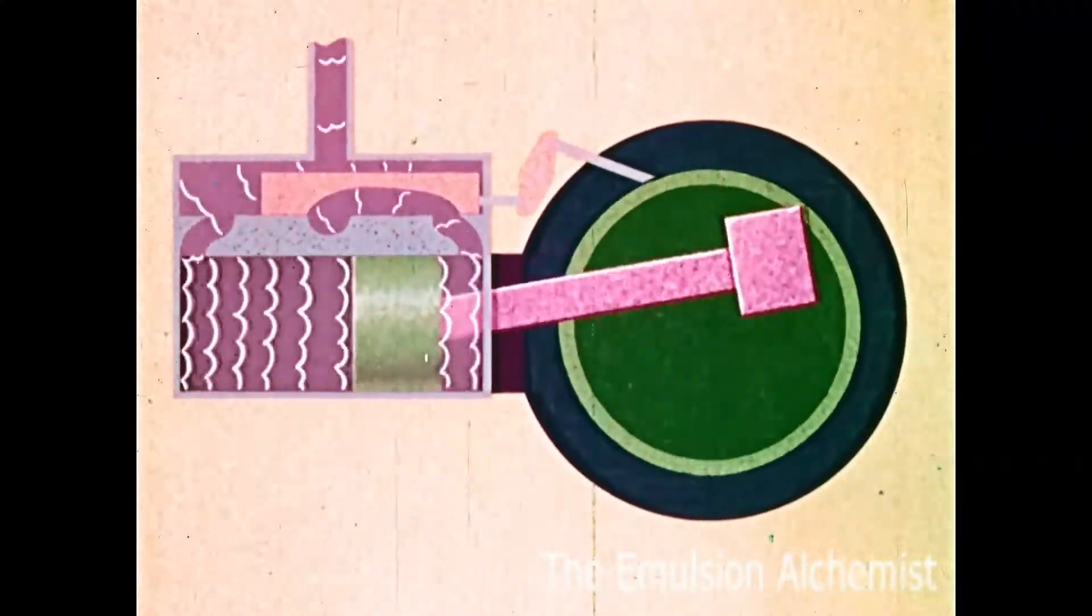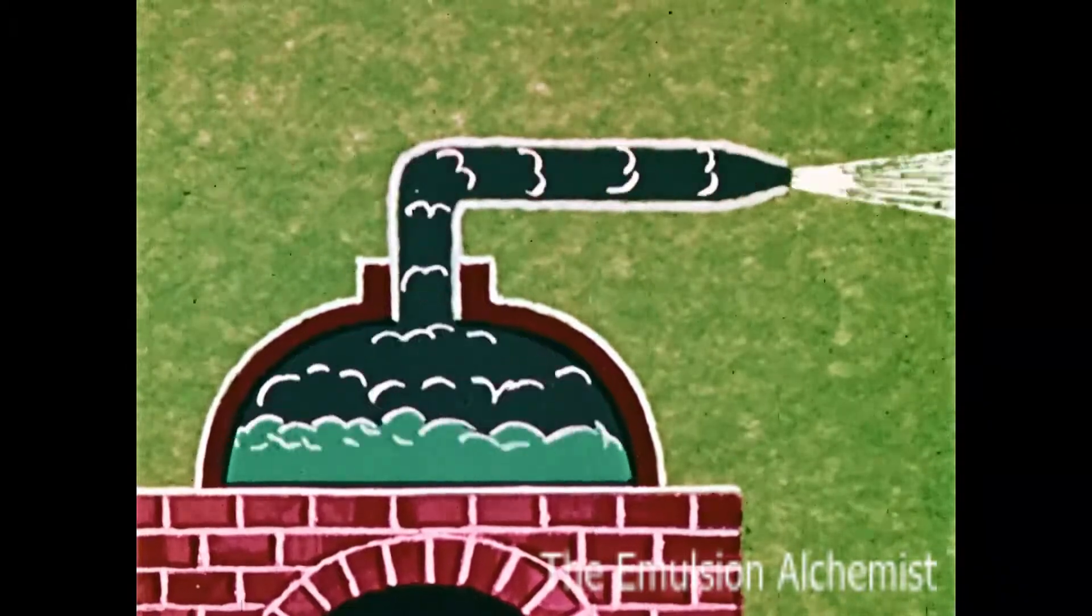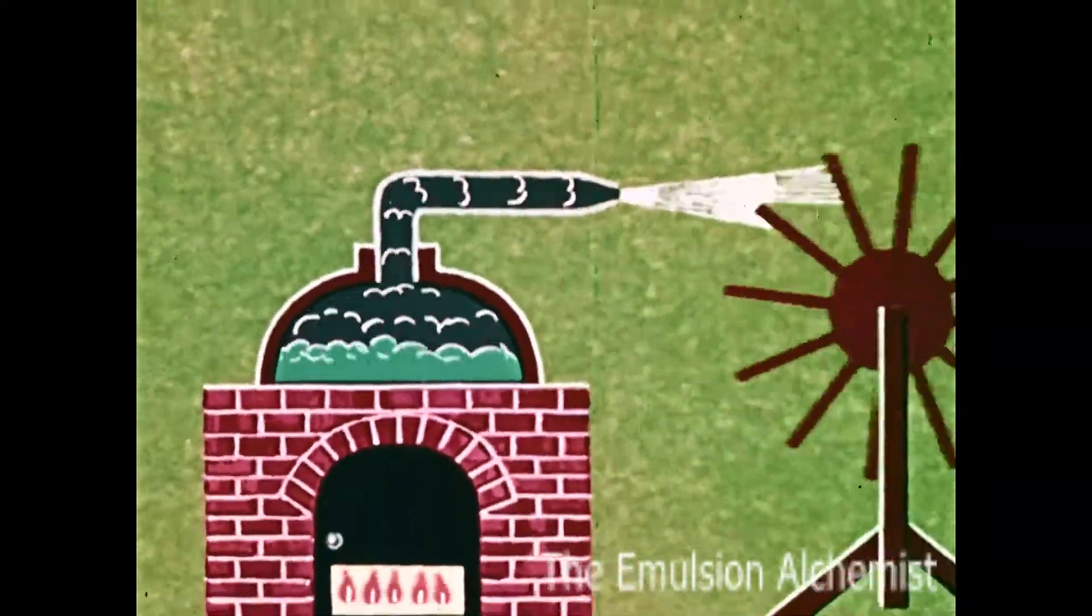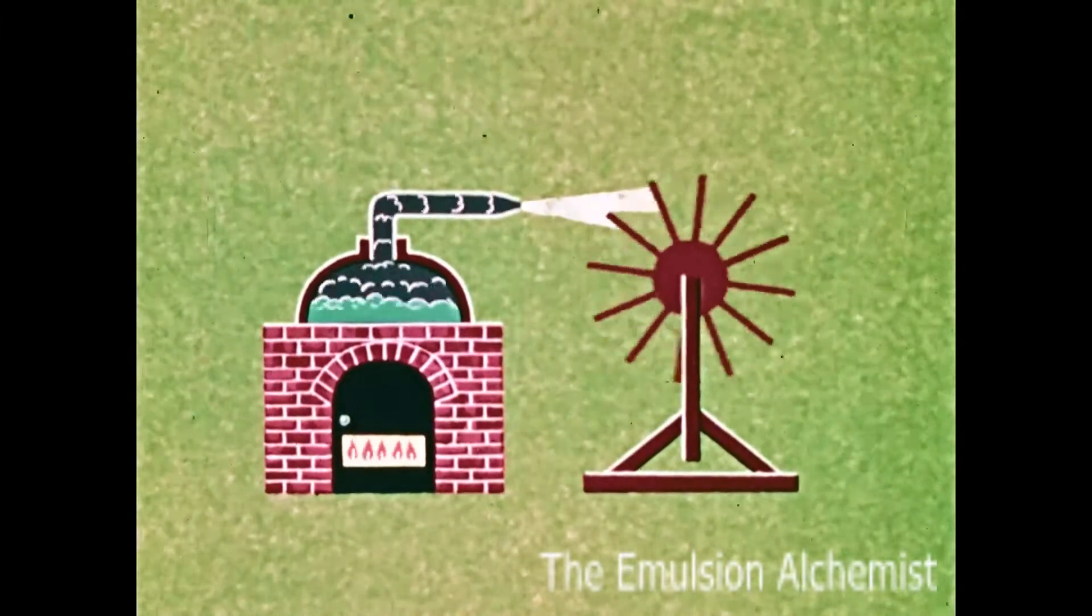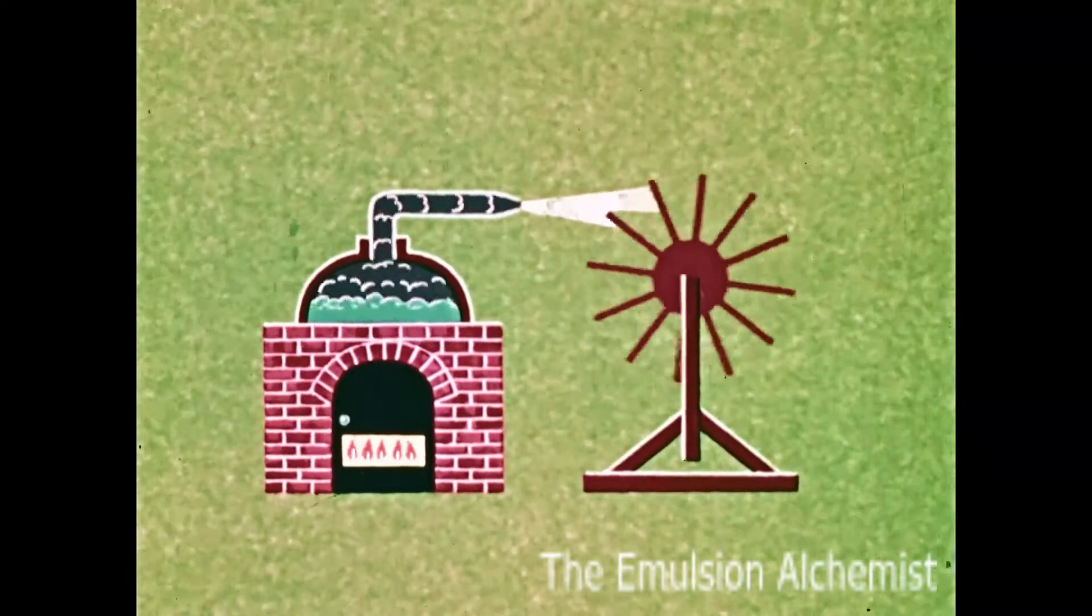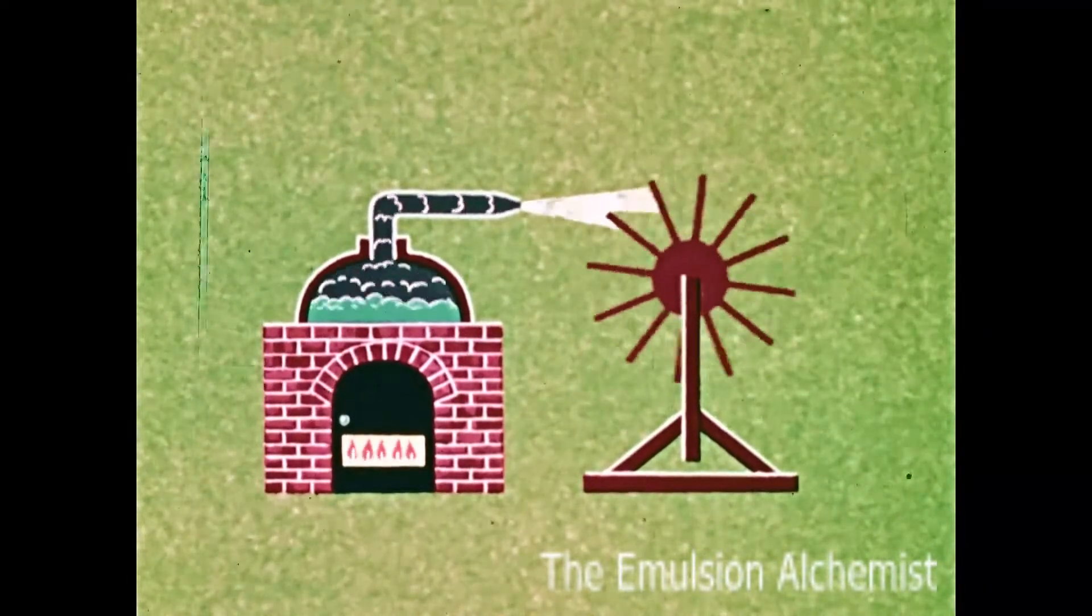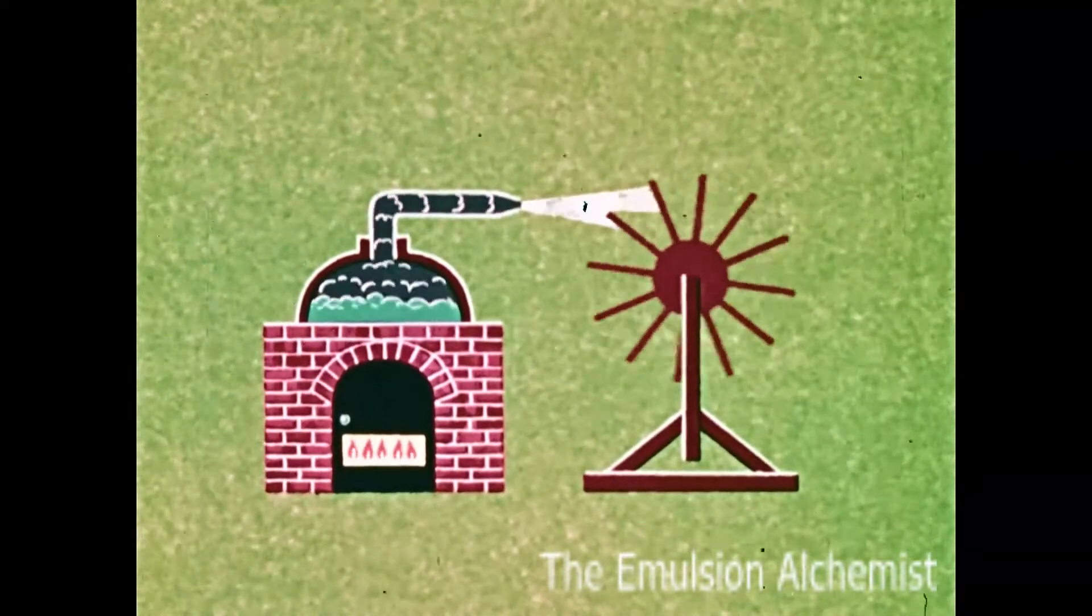Rotary motion can also be produced by taking the steam right out of the boiler, putting it through a nozzle to increase its velocity, and directing it against blades on a wheel, thus converting heat energy into mechanical energy. So the steam turbine was born. It provided instant direct rotary motion.